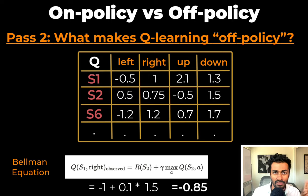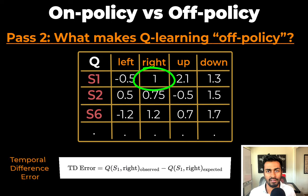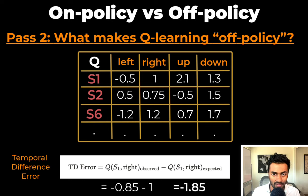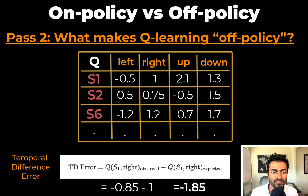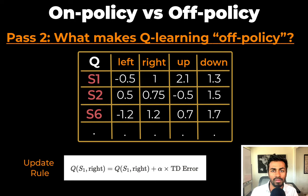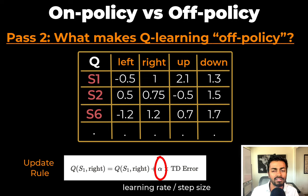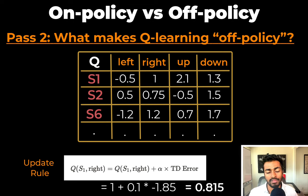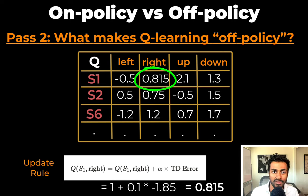The value currently stored in the Q-table for S1-right is 1. The difference between the observed and expected value is known as the temporal difference error — negative 0.85 observed minus the expected value of 1 gives negative 1.85. We update this Q-table value using a formula that looks like a gradient update rule, where alpha is a step size or learning rate of 0.1. The new Q-value is 1 plus 0.1 times the temporal difference error of negative 1.85, giving us 0.815 as the updated Q-value.